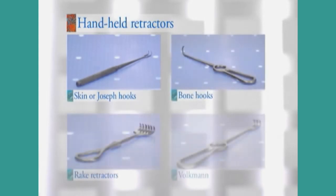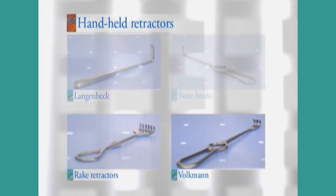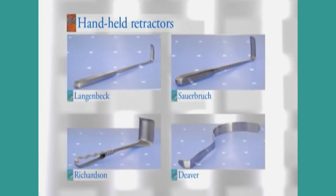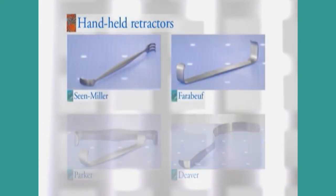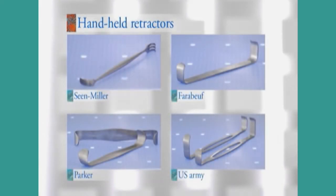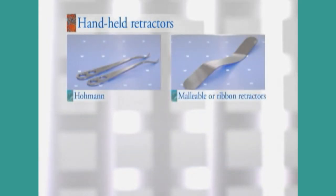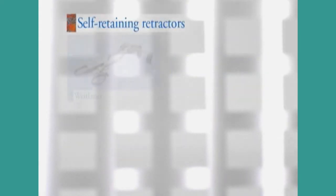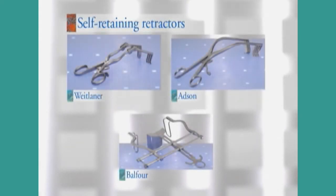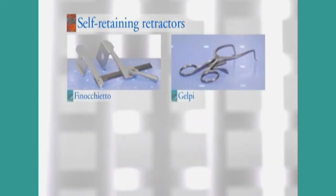Retractors are used to retract, expose, or push tissue, muscles, organs, or bones during surgery. Handheld retractors must be held during surgery. The depth of the incision determines the size and model of the retractor. The smaller models are used on the surface to hold back skin and tissue, while the larger ones are designed to retract muscles, organs, and bones in deeper cavities. Self-retaining models stay in place by themselves. To minimize trauma, the position of the retractors must be changed frequently.